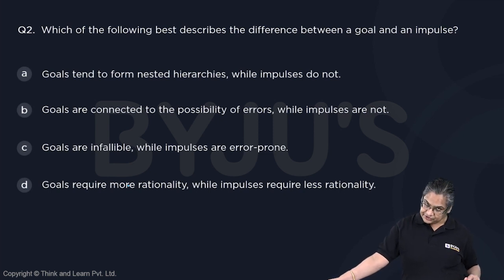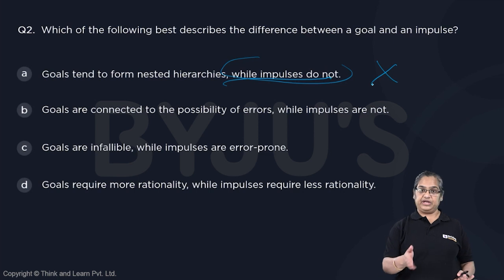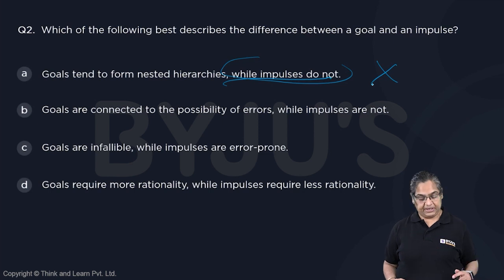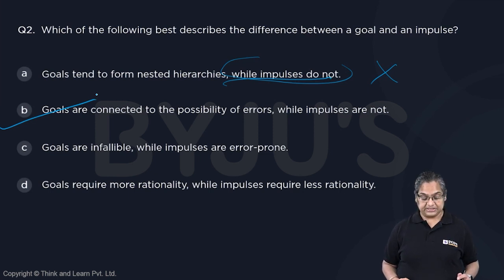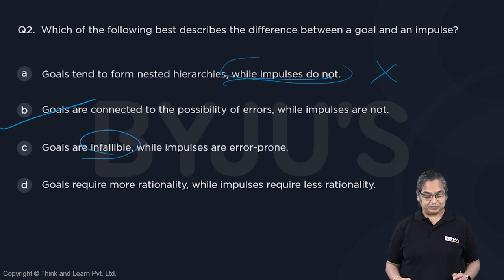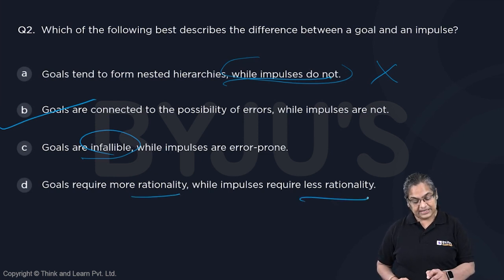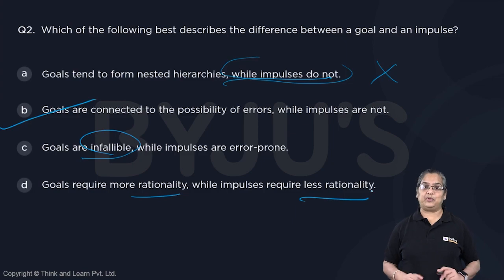Option A: Goals tend to form nested hierarchies, but impulses do not. True that goals form hierarchies, but nothing has been said about whether impulses form hierarchies — so we cannot confirm that part. Option B: Goals are connected to the possibility of errors while impulses are not — exactly what the author stated. So B is my answer. Option C: Goals are infallible and impulses are error-prone — he didn't say that; it's actually the other way around. Option D: Goals require more rationality, impulses require less — the passage doesn't mention that distinction. Therefore, the correct answer is B.